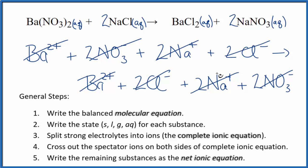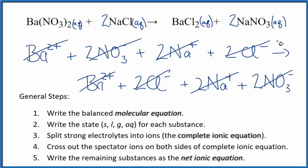So everything's crossed out. When we do that, we say that everything is a spectator ion. There's no new products, no reaction, no precipitate. That's a good way to check your work. But if everything's aqueous and there's no precipitate, and we don't have any gas or solid being involved, there's no reaction.